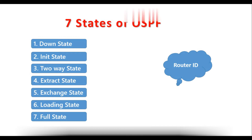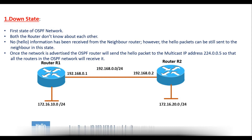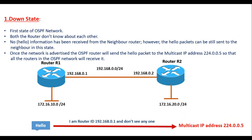Let's get into the states. The very first state is the Down state. For better understanding I have taken a scenario with two routers, R1 and R2. I have used 192.168.0.0/24 for communication, and each router has its own LAN segment in the 172.16 network. In the Down state, it is the very first state.